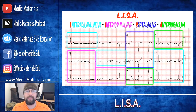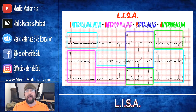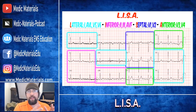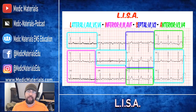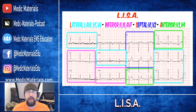So here's what LISA actually looks like broken down on a 12 lead. The L is for Lateral — your lateral wall, shaded in light baby blue here. That is leads 1, AVL, V5, and V6. If all of those have ST elevations, you can say there is a lateral wall STEMI.